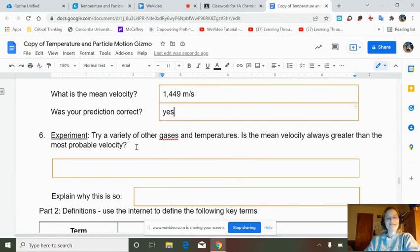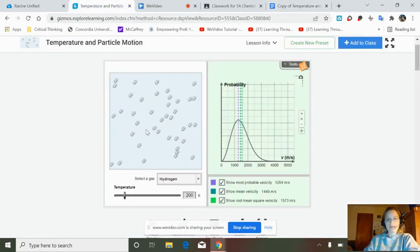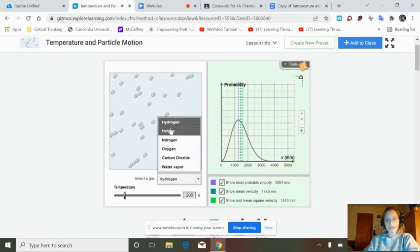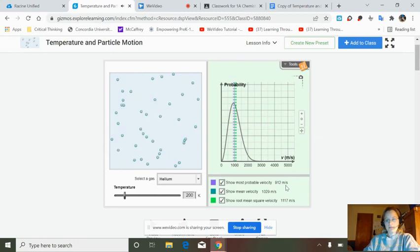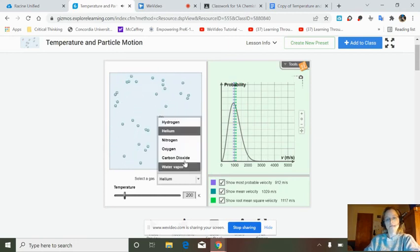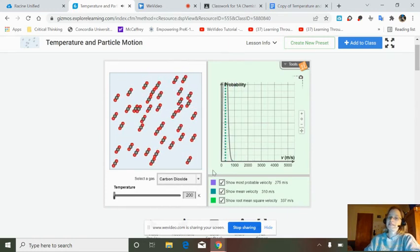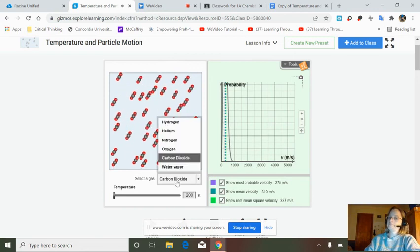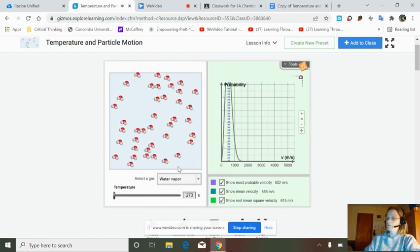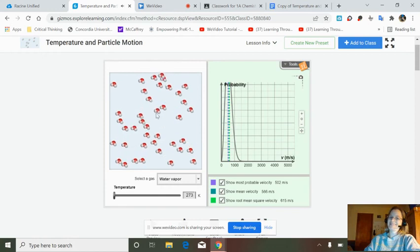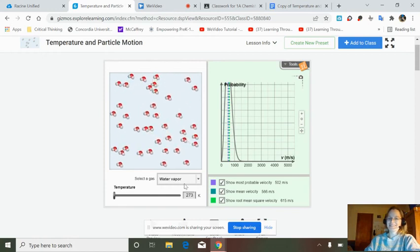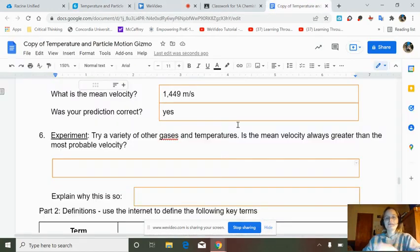So try a variety of other gases and temperatures. Is the mean always greater than the most probable? Let's take a look. Helium. So most probable, 912. Mean, 1029. Oxygen, 322, 364. So far, yes. CO2. Water vapor. Look at all those waters. So I'd say in general, yes.